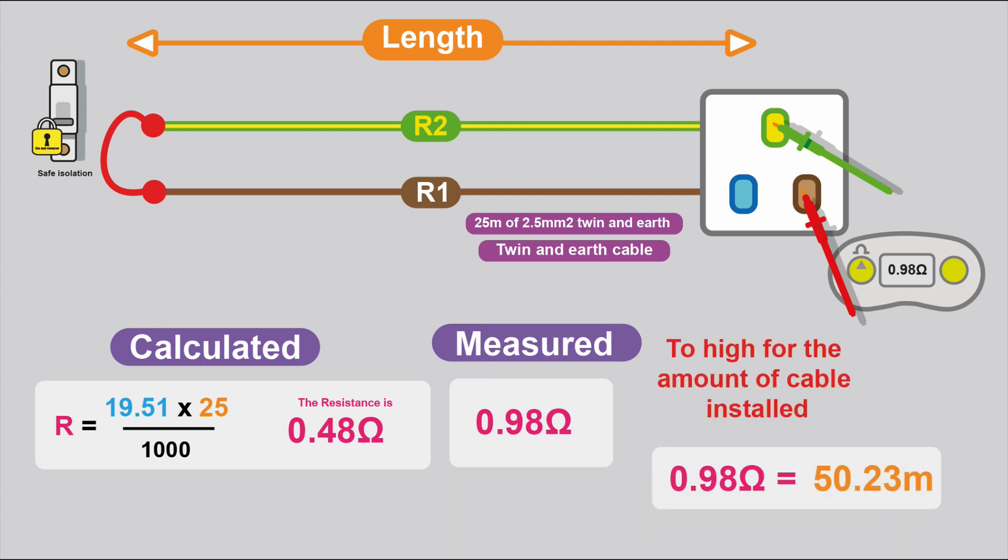The reason why it's useful to compare it to the calculated version is that you're verifying your actual test result. Say if your measured reading was 0.98 of an ohm, that would equate to over 50 metres of cable, and you know that you put around about 25 metres in. So that's well out, so you need to do some further investigation.